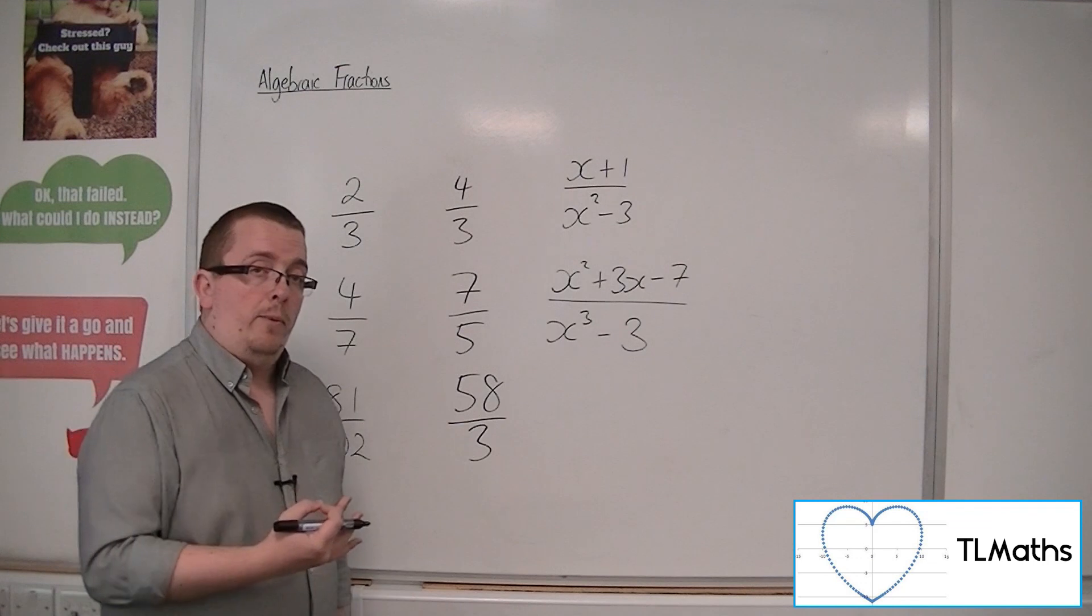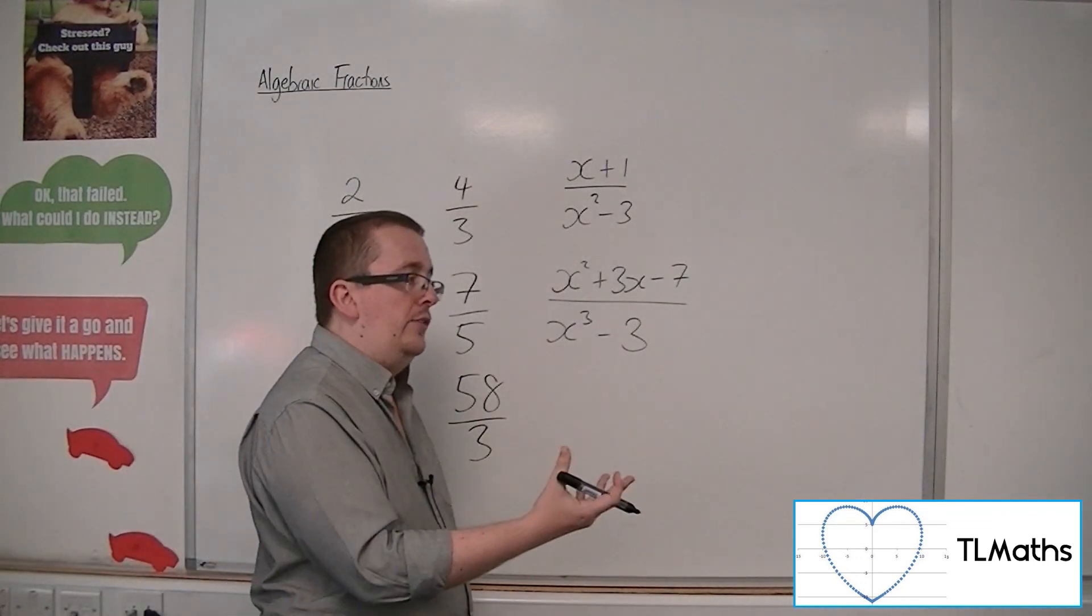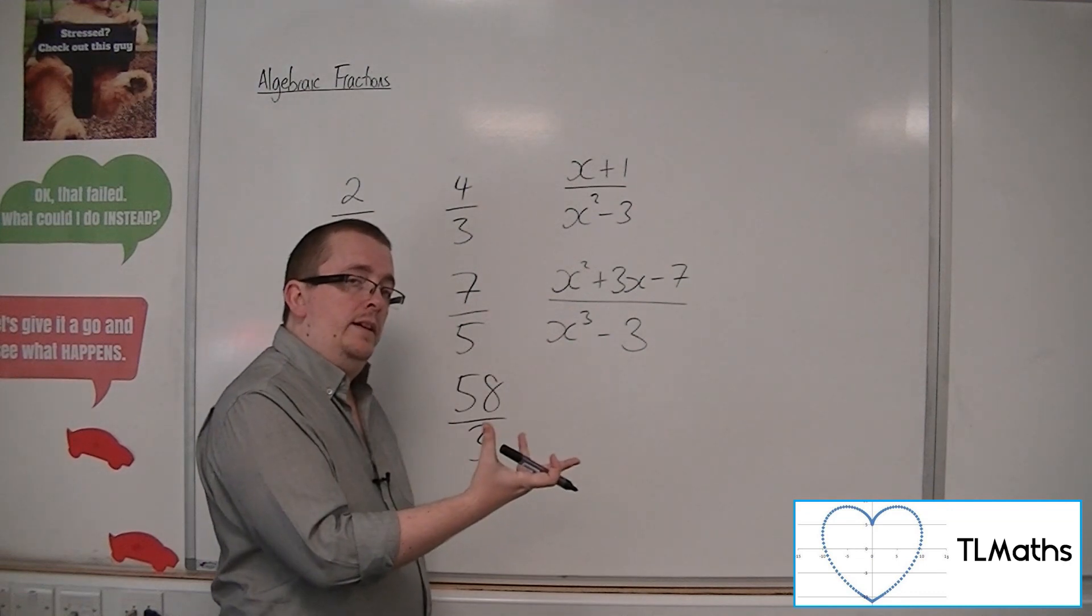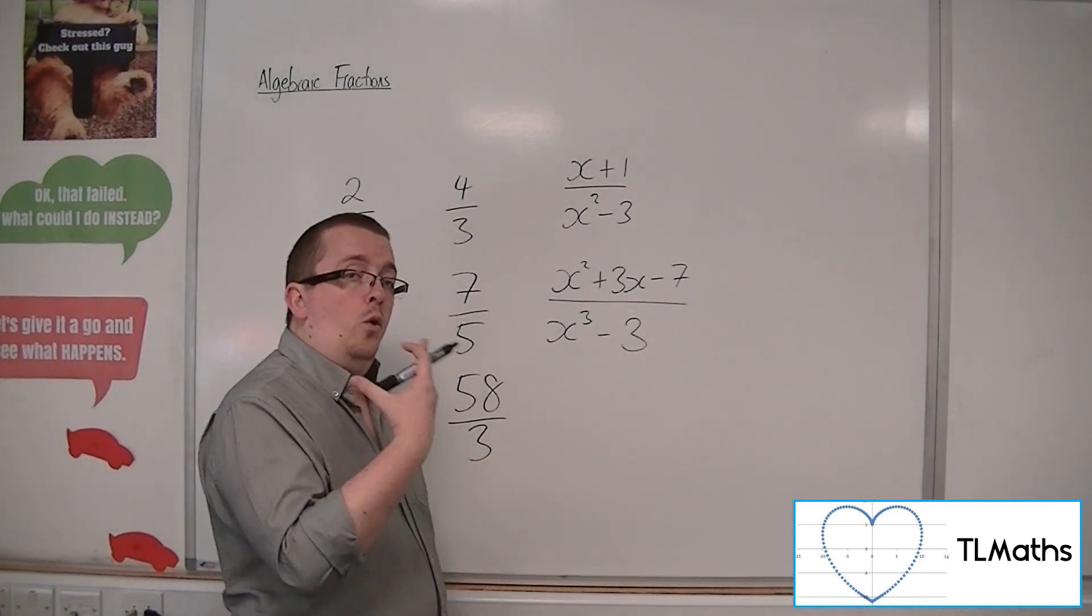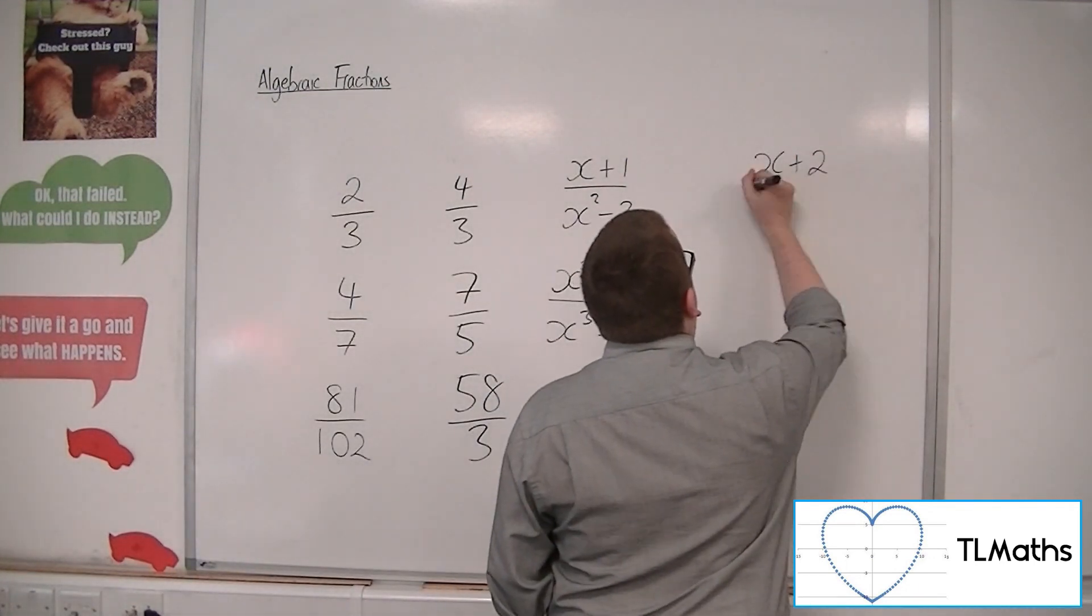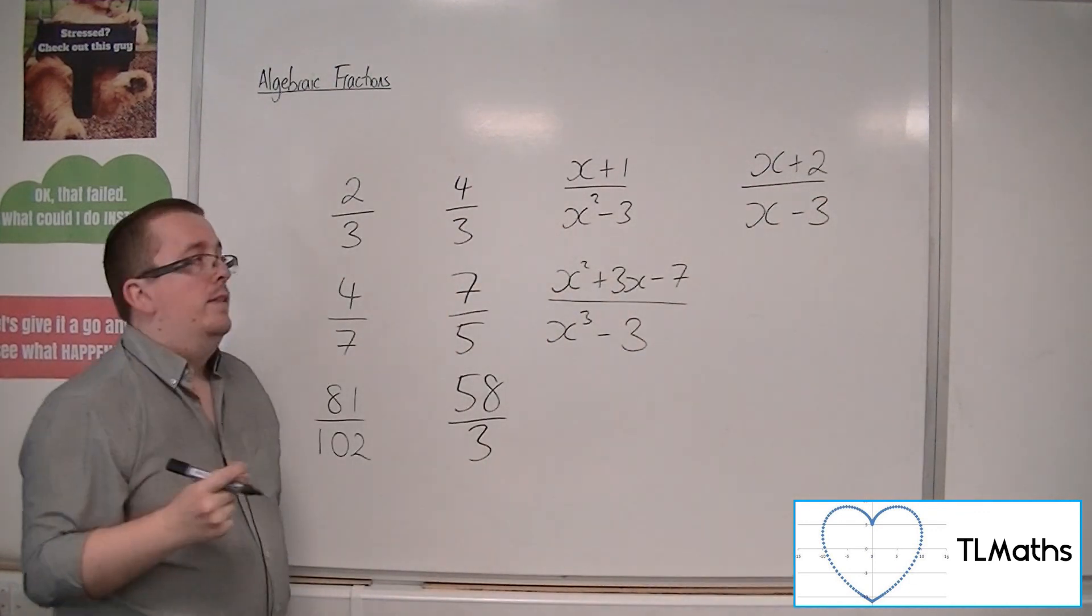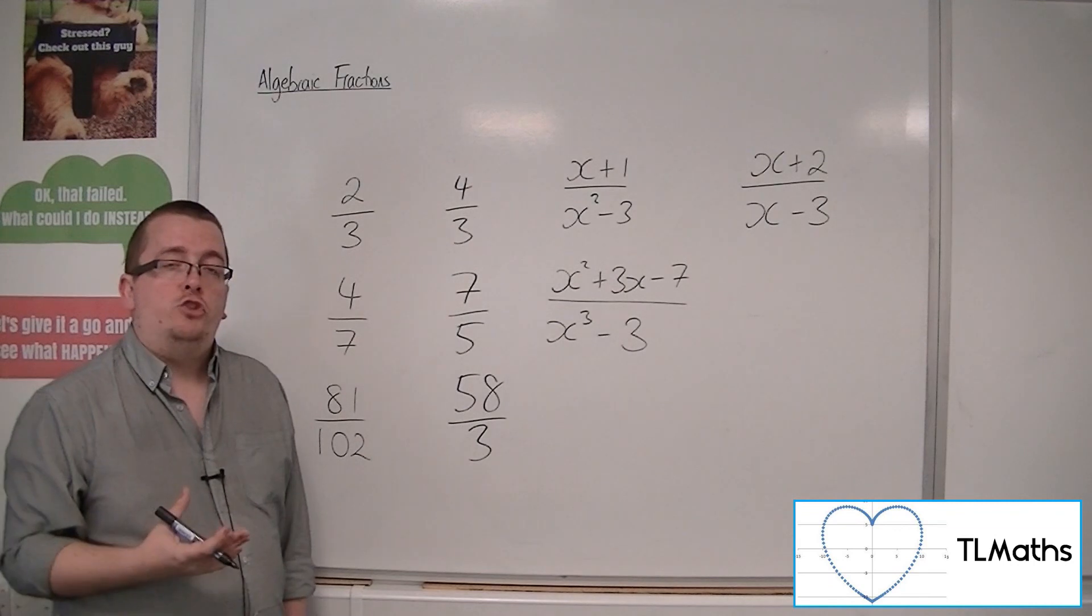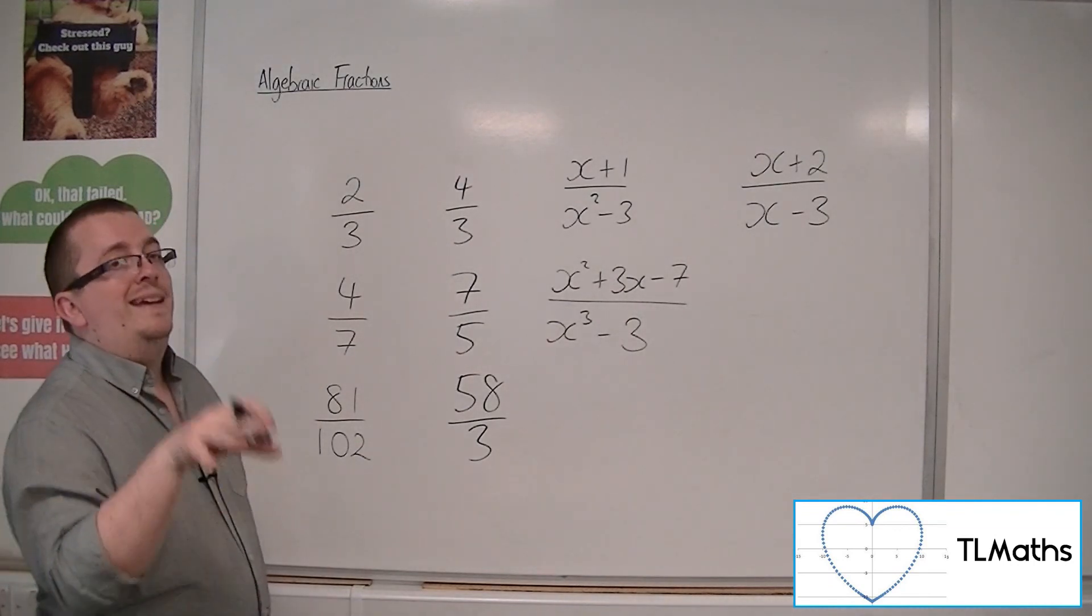An improper fraction is if the highest power of x that you have in the numerator is the same size as the one in the denominator or larger. For example, (x + 2) over (x - 3). That is an improper fraction because the power of x in the numerator and the denominator is the same.